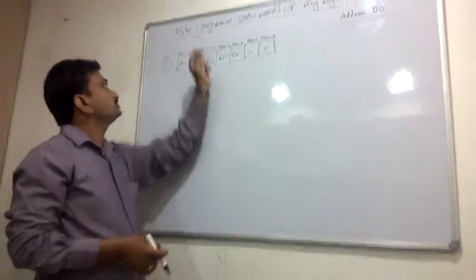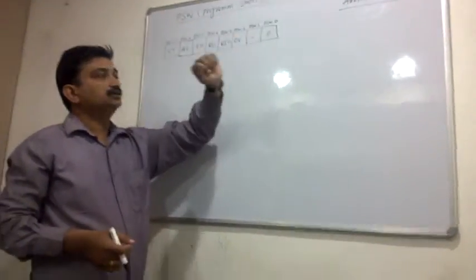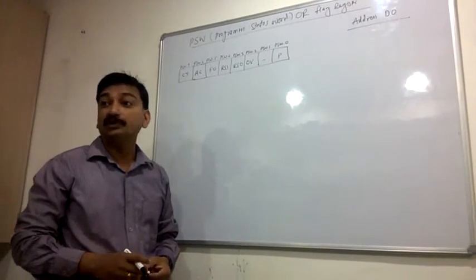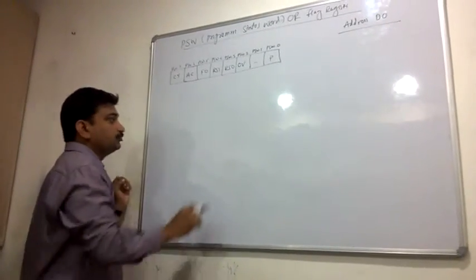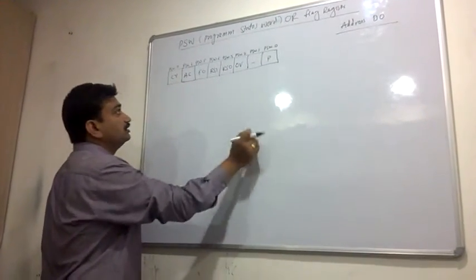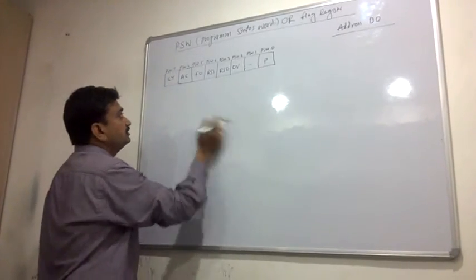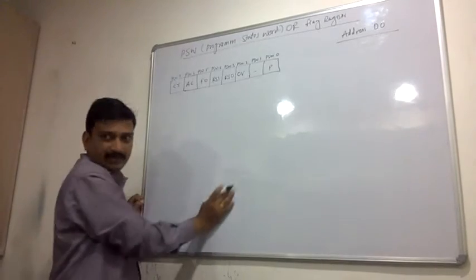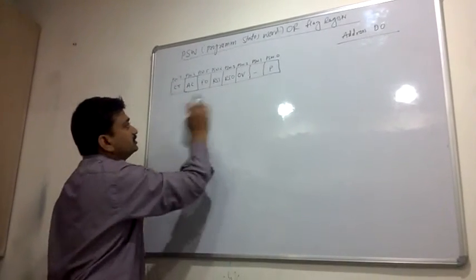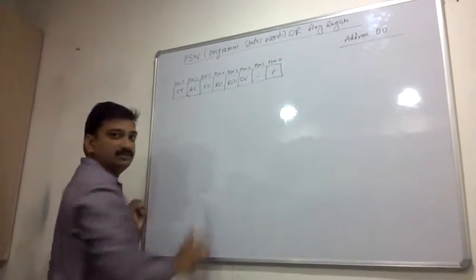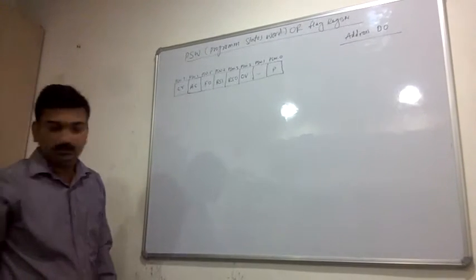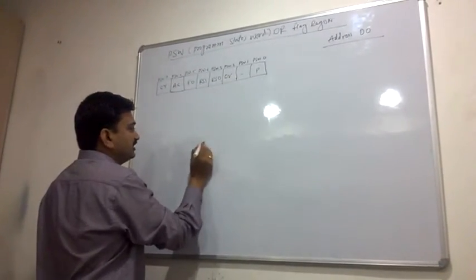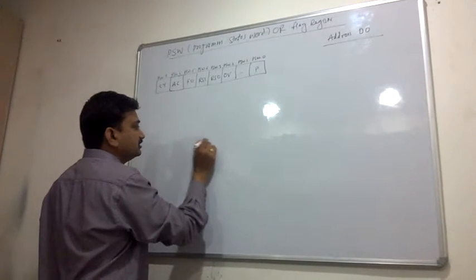In this lecture we will see the Program Status Word or the flag register, known as the PSW. The PSW is an 8-bit register in the 8051 microcontroller, so it has bit positions 0 to 7, making it an 8-bit register.